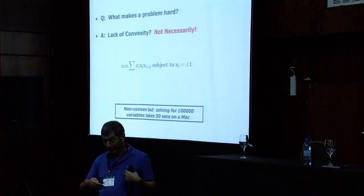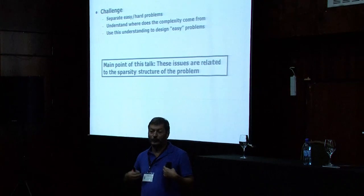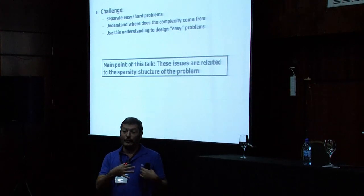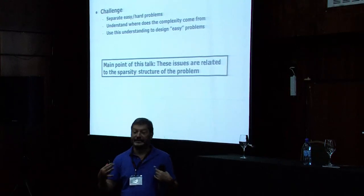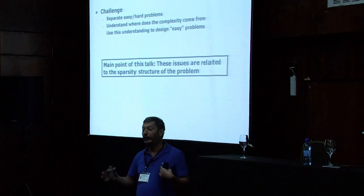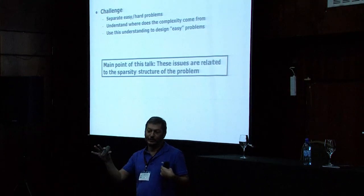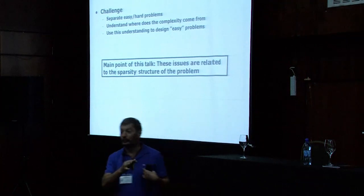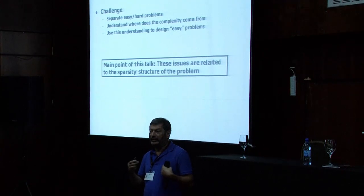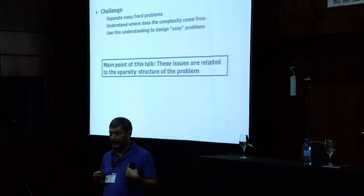There's more going on here. What I'd like to see is whether there's any way we can separate easy problems from hard problems, find out where this complexity comes from, and once we know that, maybe we can use this to our advantage to make sure we design easy problems. At the end of the day, the answer tends to be common sense and something we've been using in control since forever. The key point is that what's going on here is not convex versus non-convex — it has to do with some sort of hidden sparse structure that your problem has.